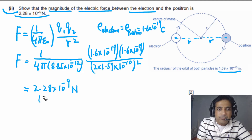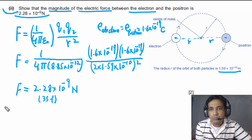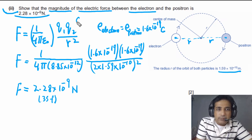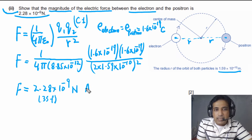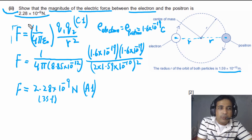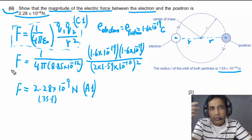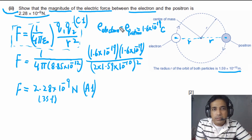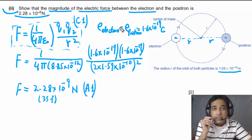This question has two marks. The first mark is a C mark if you have written the correct equation. The second mark is the answer mark if you got the correct answer. Key points to remember: the charge on both particles is the same because they are a particle–antiparticle pair, and you must use the separation between the two charges — which is 2R — not just the radius R.